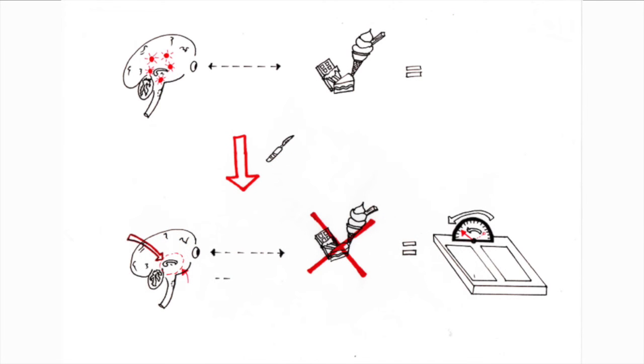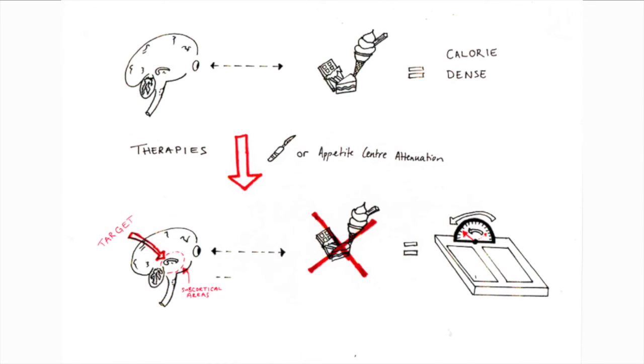In conclusion, calorie-dense food activates brain reward centres. Therapies that attenuate appetite centres also reduce reward areas in the brain. To control appetite and food intake, therapies need to target these subcortical areas of the brain.